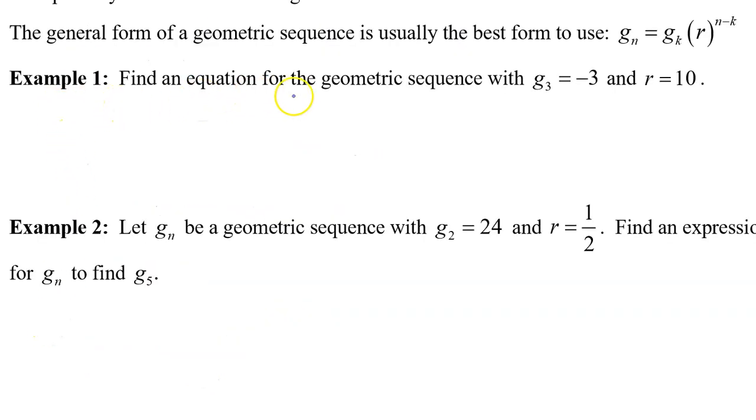Example 1. Find an equation for the geometric sequence with g3 equals negative 3 and r equals 10. We can start off by writing gn equals gk, some term that we know. Let's use g3. r is the common ratio, so that goes right here. And it is to the n minus k power. That's this index minus this index. In other words, n minus 3.